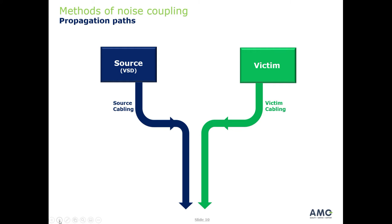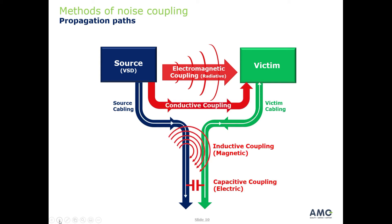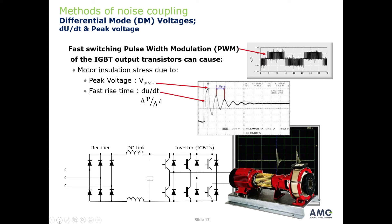We look at propagation paths of EMC — whether it's radiative, conductive, inductive, or capacitive — and look at the effects of dV/dt voltages and peak voltages on the motor on the output of the drive.